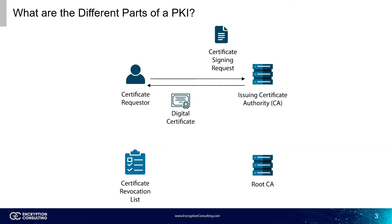Once it gets the CSR, the issuing certificate authority checks over all the information, creates a digital certificate with the public key included, and sends it off to the requester. The root CA is kept offline to stop it from compromise, as it is the top link in the PKI.